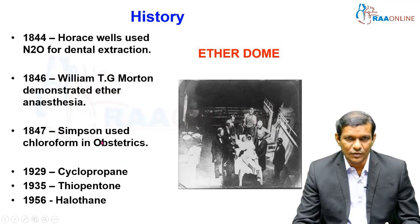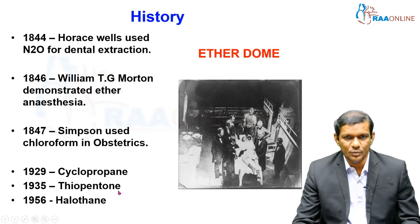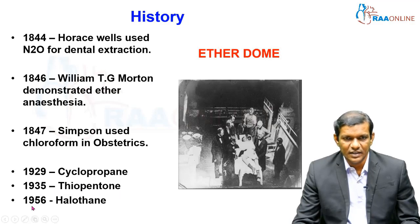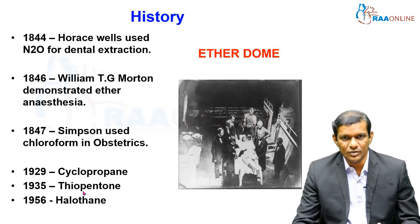After ether became widely used, in 1847 Simpson in the UK used chloroform in obstetrics, bringing chloroform into clinical practice. In 1929, cyclopropane was introduced. A landmark year was 1935 when thiopentone began to be used — prior to this, all agents were inhalational; thiopentone marked the beginning of intravenous anesthesia. Then in 1956, halothane arrived as a more refined inhalational anesthetic, followed by isoflurane, desflurane, and others.